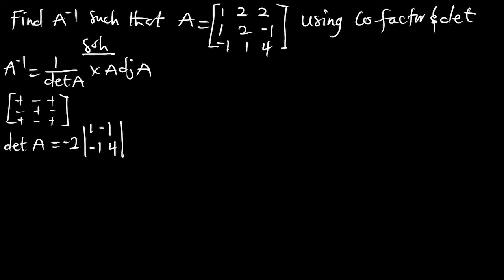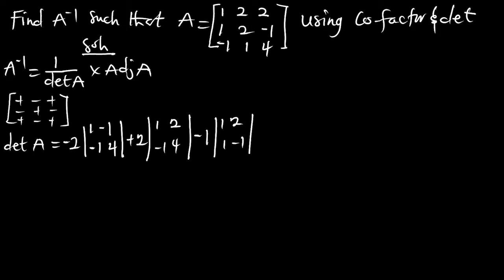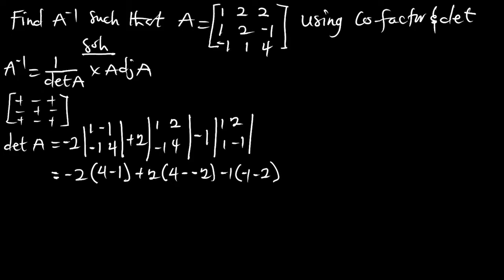Then the second 2, which from the sign notation is positive — so positive 2 — and the submatrix is 1, 2, negative 1, and 4. The last part, which is negative, gives negative 1, multiplying the submatrix 1, 2, 1, negative 1. Computing this: negative 2 multiplying (4 minus 1), minus 2 multiplying (negative 1 by negative 1 minus 2), and the determinant of matrix A is going to be 9.